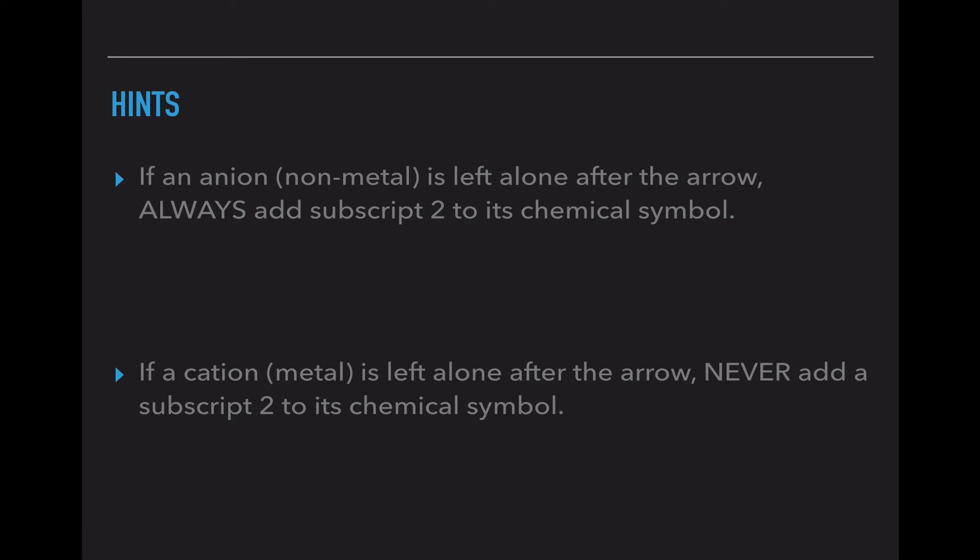So remember, we have a couple hints. If an anion or a non-metal is left alone after the arrow, always add a subscript 2 to its chemical symbol, because they will always bond to another atom to create a molecule. If a cation or a metal is left alone after the arrow, do not add a subscript 2. They will not bond to another atom because they want to kick their electrons out. They are not willing to share.